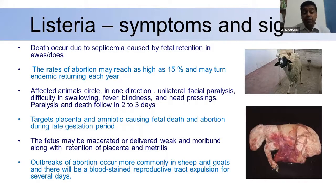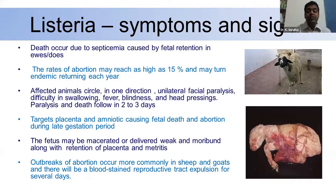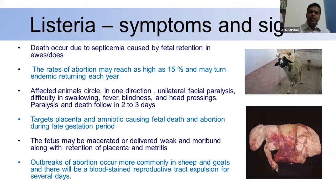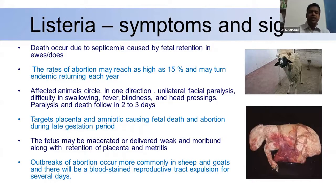The abortion rate can reach as high as 15%, and Listeriosis is the most common cause of abortion in sheep, especially if not goats. Other clinical symptoms include paralysis and neural symptoms. Macerated fetuses are also reported, as well as weak moribund lambs. Listeriosis usually comes as an outbreak, not a sporadic occurrence.